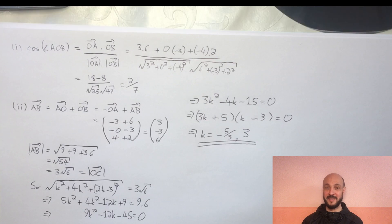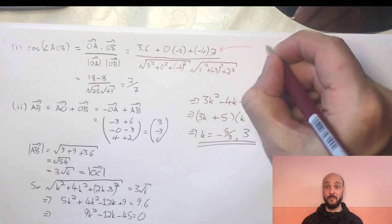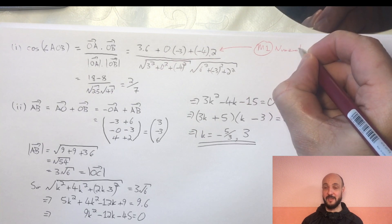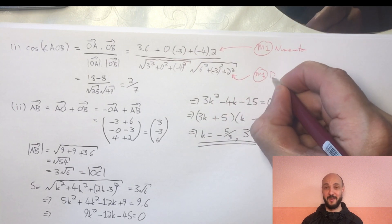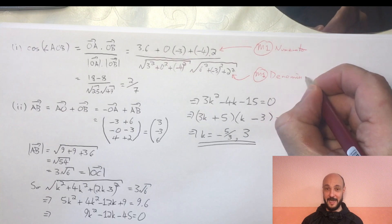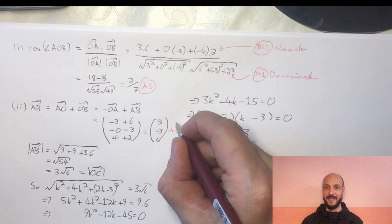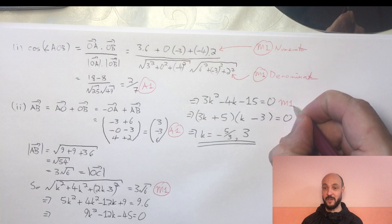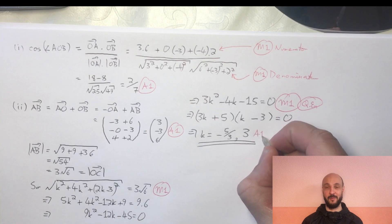In terms of where the marks are assigned: in the first part we get one method mark for accurately getting the numerator through component-wise multiplication, one method mark for accurately getting the denominator using Pythagoras theorem, and one accuracy mark for the final answer of 2 over 7. In the second part we get an accuracy mark for the vector AB as 3, minus 3, 6, a method mark for the use of moduli on vector OC, another method mark for obtaining a quadratic equation, and an accuracy mark for getting 3 and minus 5 over 3 for K.